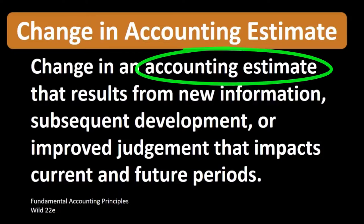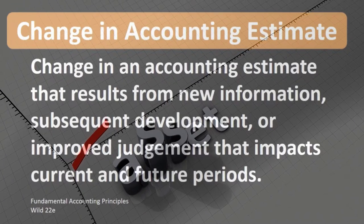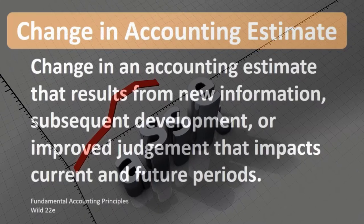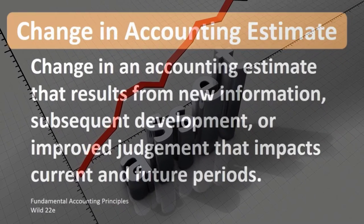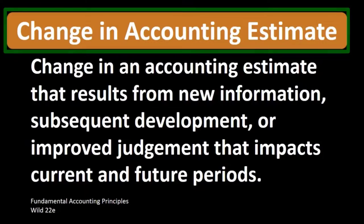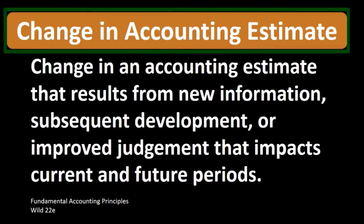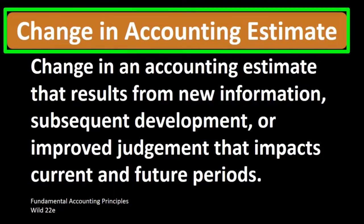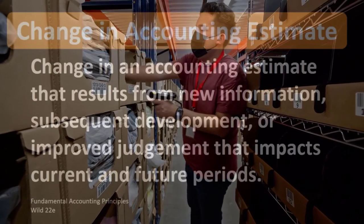Estimates such as depreciation — putting the fixed asset on as an asset and then depreciating that fixed asset. Things like warranties, wanting to write off the expense related to the warranties at the same time that the defaulted merchandise was sold, rather than in a future time period.